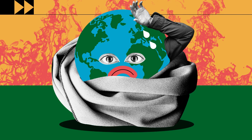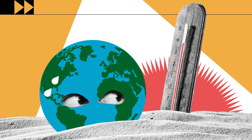Earth's climate has changed throughout history. Just in the last 650,000 years, there have been seven cycles of glacial advance and retreat,